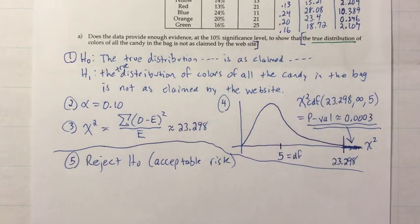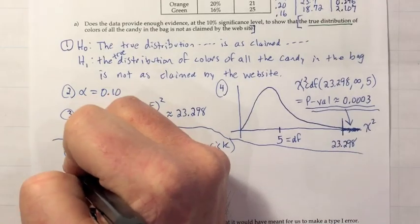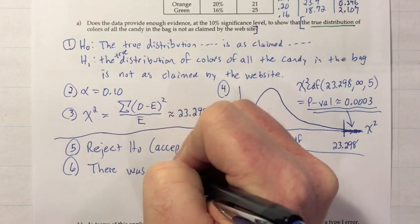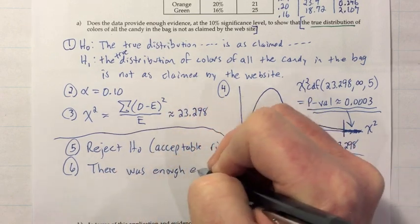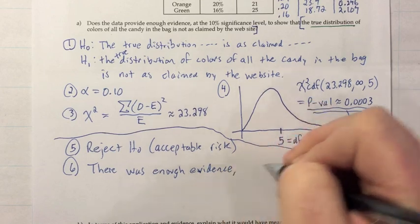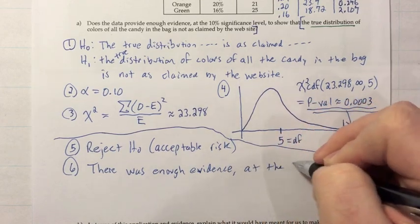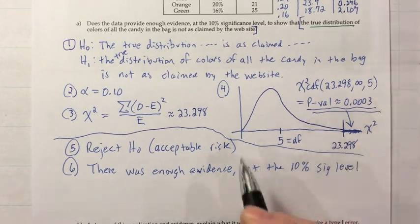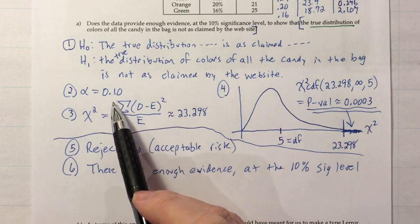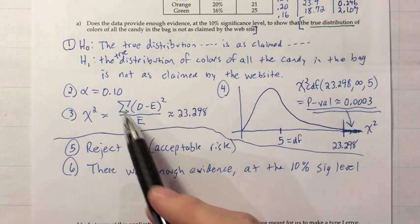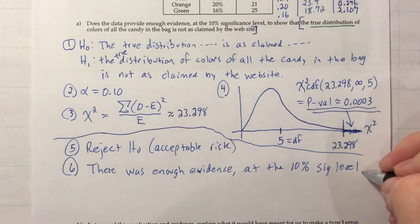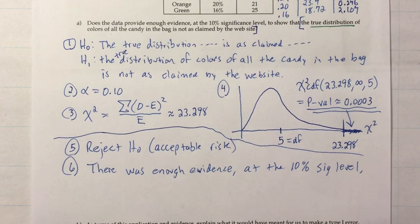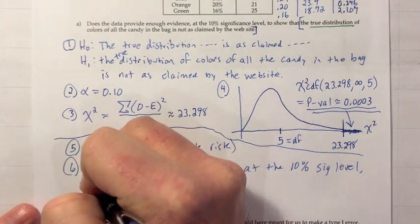We just need to write our conclusion in words. We were able to reject H0 because there was enough evidence at the 10% significance level. Our p-value was really small, so we could have rejected at the 5% or 1% significance levels as well — we made it by a long margin. There was enough evidence at the 10% significance level to show H1: that the true distribution of colors of all the candy in the bag is not as claimed by the website.